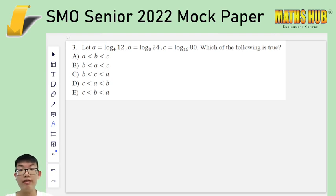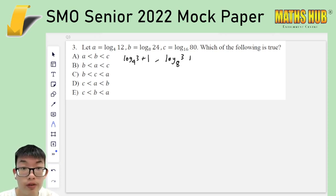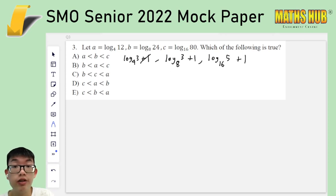Question 3. Now we are asked to compare 3 logarithms, and there are log base 4, log base 8, log base 16. So once again, it all has something to do with powers of 2. Now notice that 12 is divisible by 4, 24 is divisible by 8, and 80 is divisible by 16. So we can start off by making our life fair bit easier just by writing it as log base 4 of 3 plus 1, and then log base 8 of 3 plus 1, and log base 16 of 5 plus 1. So using our product rule for logarithms, we split it off, and the plus 1s are irrelevant for comparison, so we can just get rid of them.